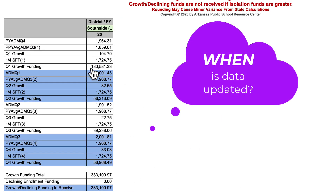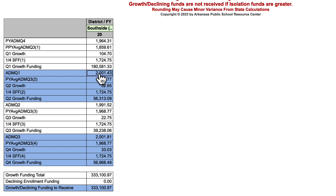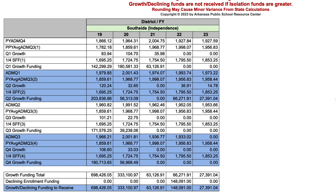So when does this calculation occur? As soon as we get the quarterly enrollment data. Once we get the state's information regarding first quarter ADM, we enter that in this slot and then it'll do the calculation for you. It's automatic and you'll see it immediately once we get the information from the state with regards to your average daily membership for each quarter.